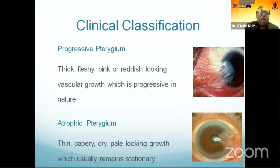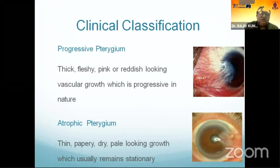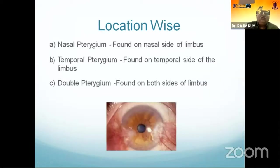Clinically, pterygium can be progressive or atrophic. Progressive pterygium is thick, fleshy, pink or reddish vascular growth that advances, while atrophic pterygium is thin, pale, dry, and usually stationary. By location, it can be nasal, temporal, or double pterygium. Nasal pterygium occurs on the nasal side of the limbus, temporal on the temporal side, and double pterygium can occur on both sides.